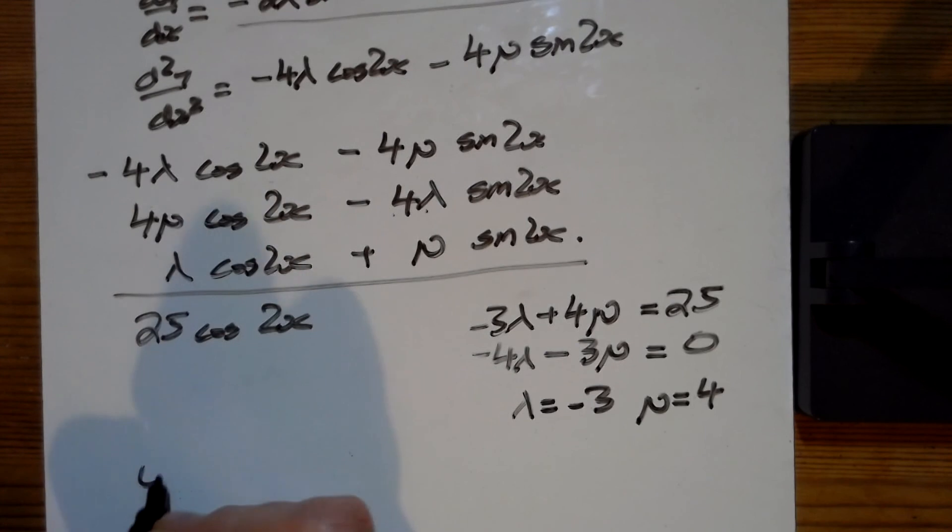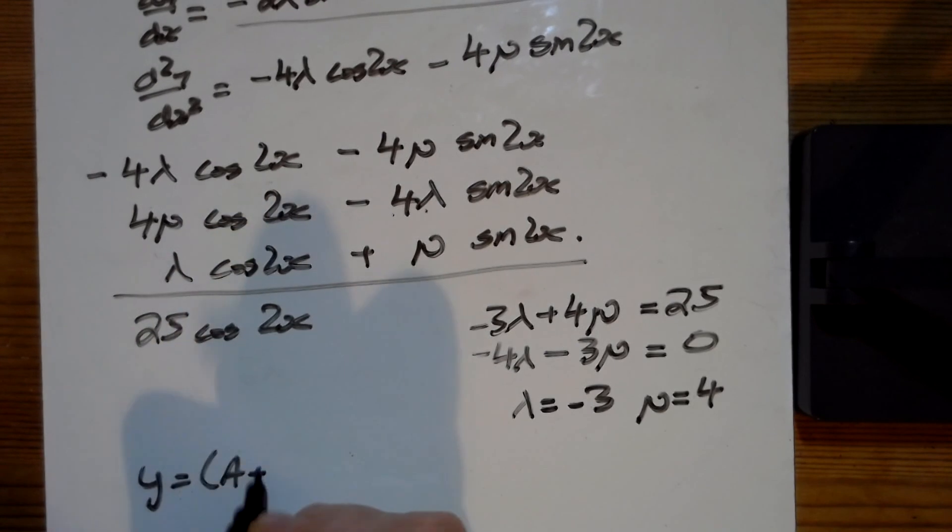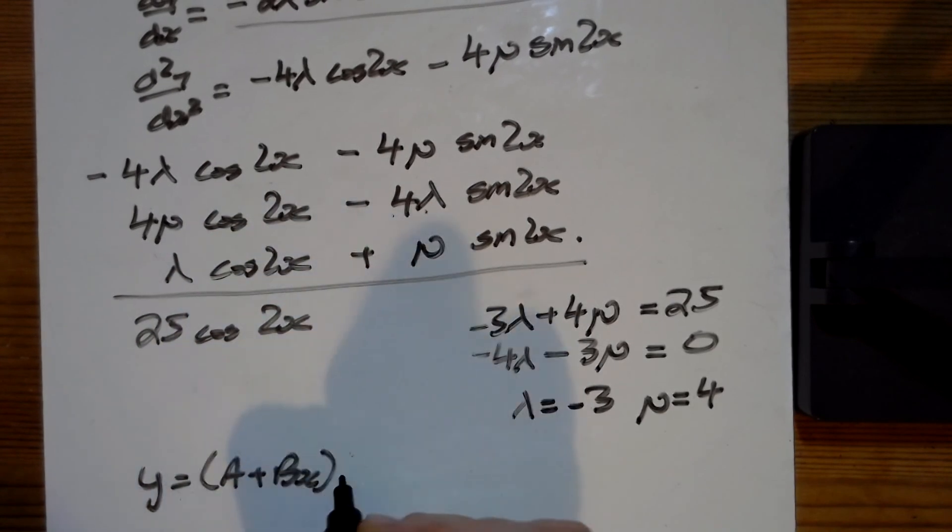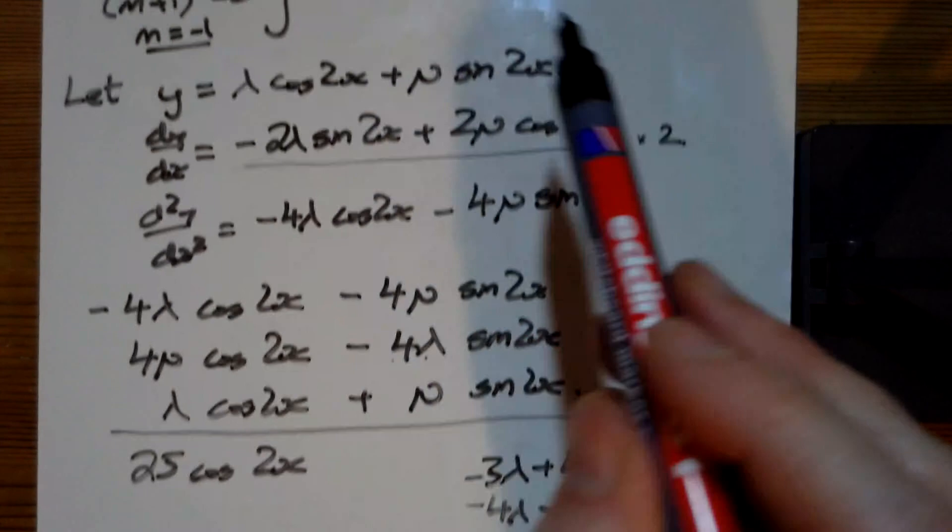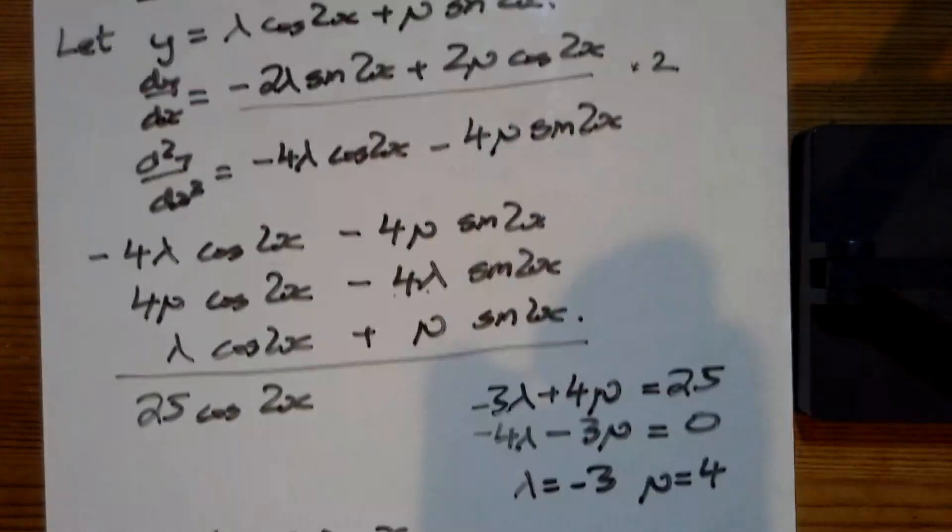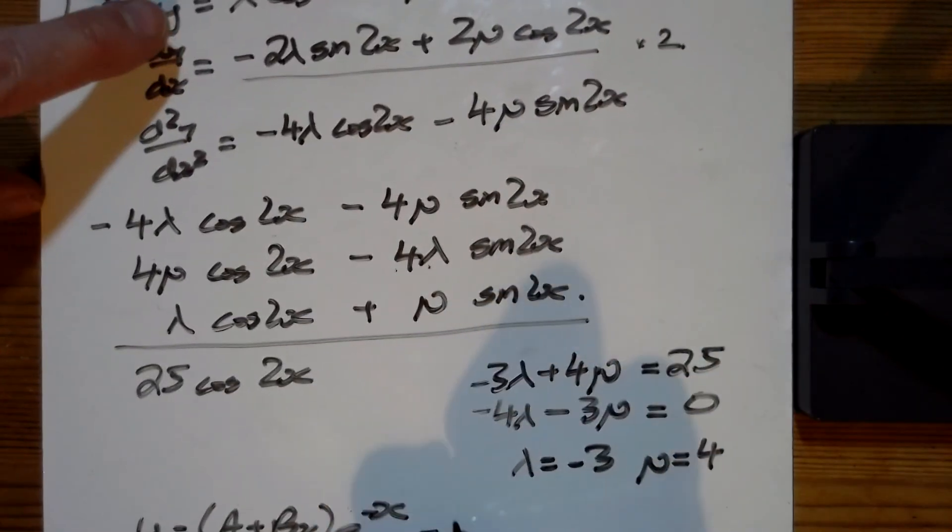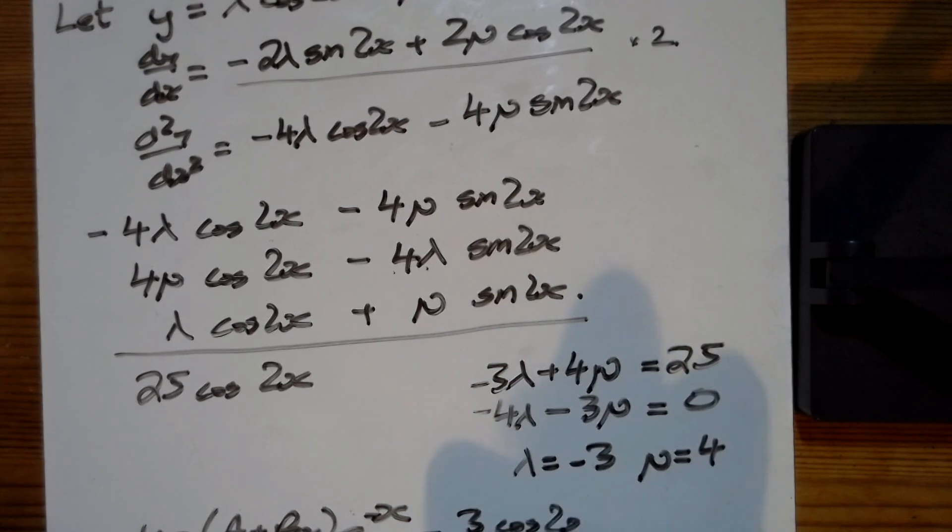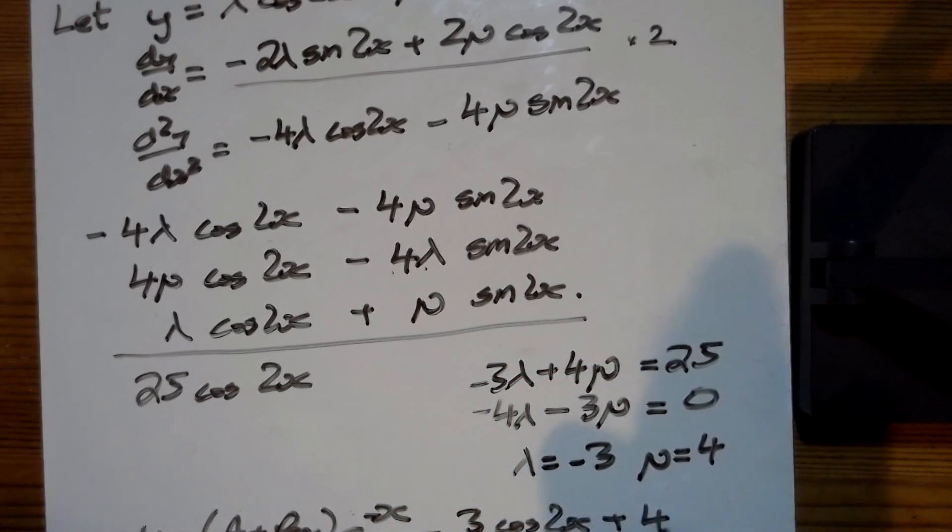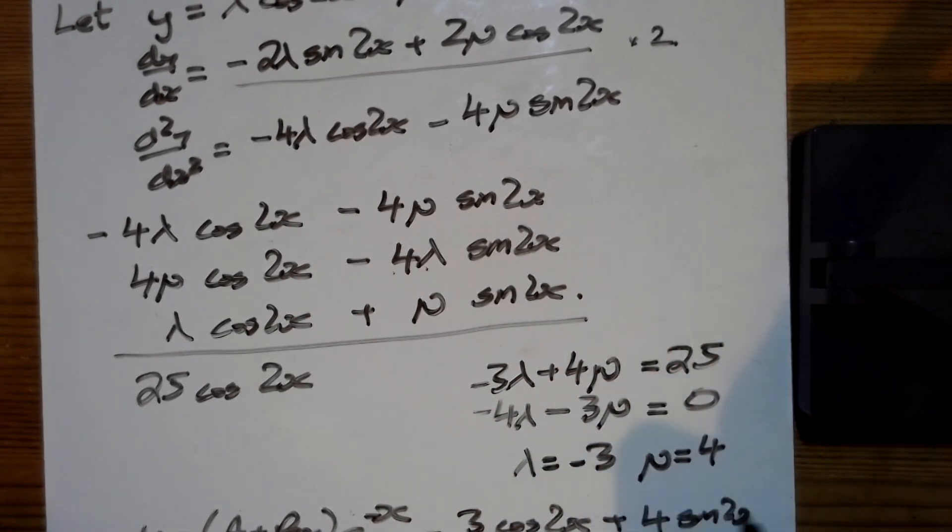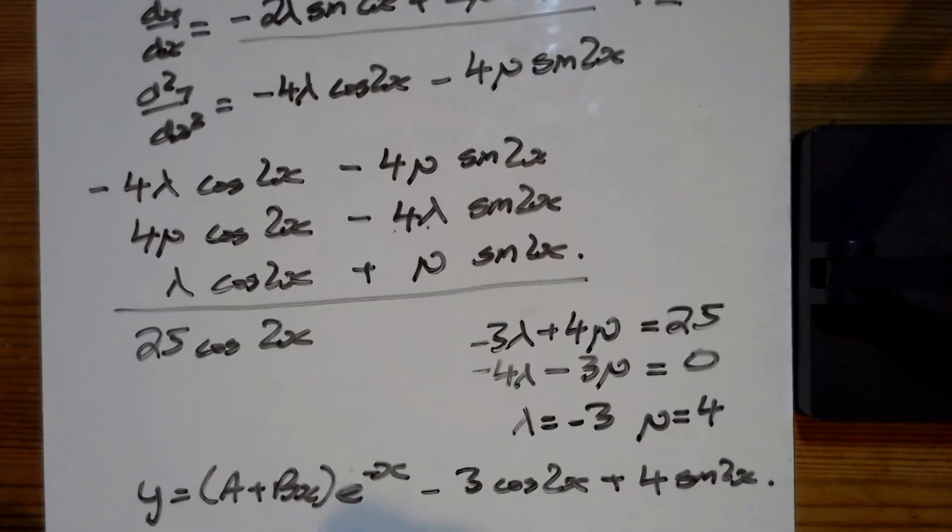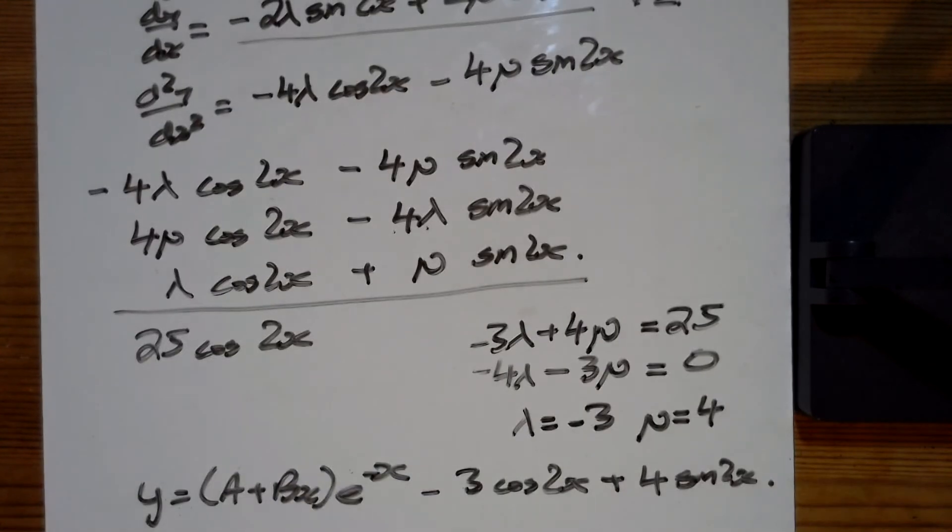I can write my answer then. My answer is y = (a + bx)e^(-x) from all the way up there, and then I've got -3cos(2x) + 4sin(2x) from the simultaneous equation there.